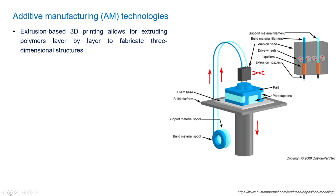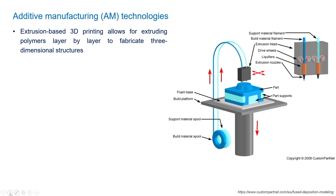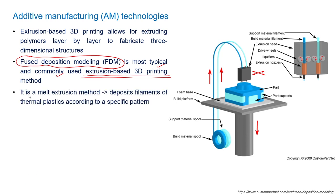In this way we can develop 3D structures of whatever shape we require. The most popular method in extrusion-based 3D printing is FDM — fused deposition modeling. It is the most typical and commonly used extrusion-based 3D printing technique. In FDM, the wire of polymeric material is melted and the molten wire in its semi-solid mode is deposited onto the material as filament-type deposits.